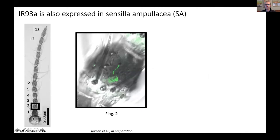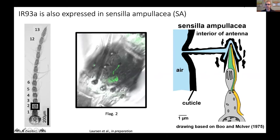IR93A is expressed in more than just the thermosensory sensilla at the tip of the antenna. It's also found in the first and second flagellomeres, where you have relatively unique structures called sensilla ampullacea — also known as peg-in-pit sensilla. They exist in a hollow cavern recessed internal to the antenna, accessed via narrow tubes running perpendicular to the antenna's length. Within these caverns you have poreless sensilla innervated with two IR93A-positive neurons. This has been described for decades using EM images, but because the tube is so narrow, it's been impossible to get an electrode in to actually record what these sensilla might be responding to.